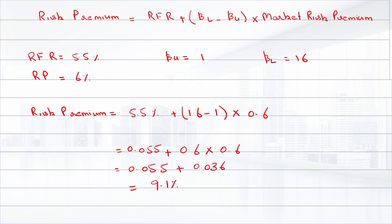So the additional risk premium required to compensate for financial risk is approximately 9.1%.